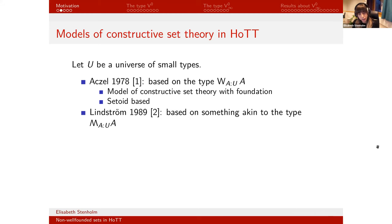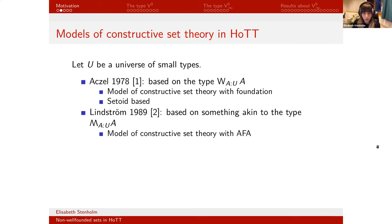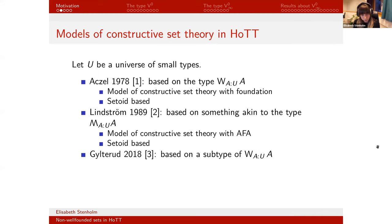Then in 1989, Ingrid Lindström made another model of constructive set theory based on something akin to the corresponding M-type — a type of trees that are not well-founded, so trees with possibly infinite depth, but still with branchings over the universe U. She showed this is also a model of constructive set theory, but this time instead of foundation it satisfies Aczel's anti-foundation axiom. Again this model is setoid-based, defining an equivalence relation and interpreting equality as that relation.